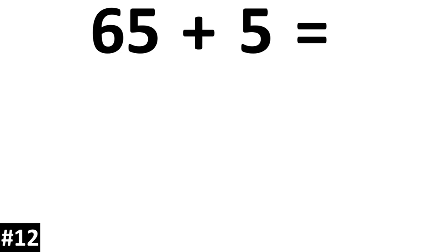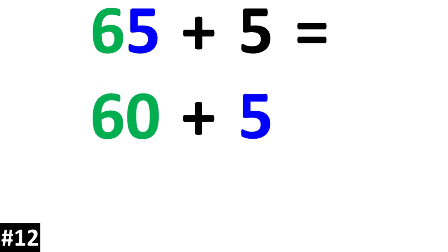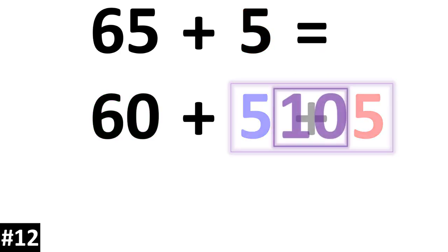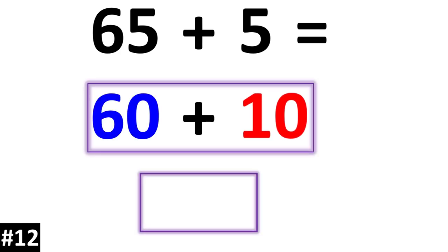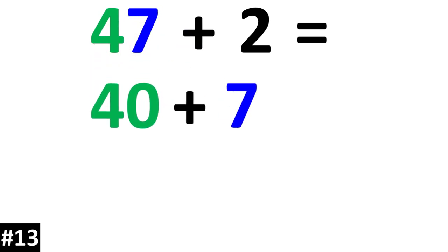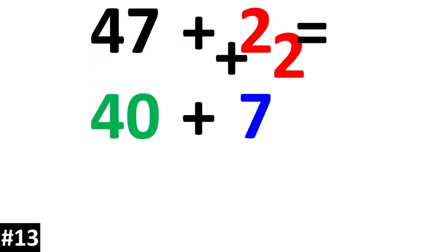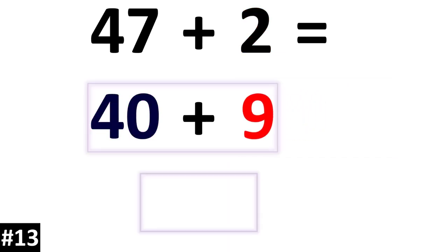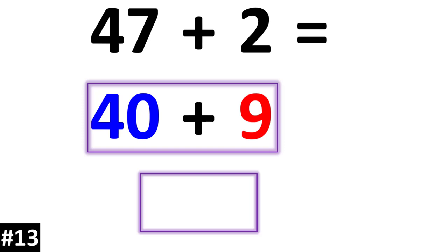65 plus 5. 65 is the same thing as 60 plus 5. If we add the other 5, 5 plus 5 gives us 10. 60 plus 10 is 70. Next, 47 plus 2. 47 is the same thing as 40 plus 7. 7 can be added to the 2, and that'll give us 9. 40 plus 9 is 49.